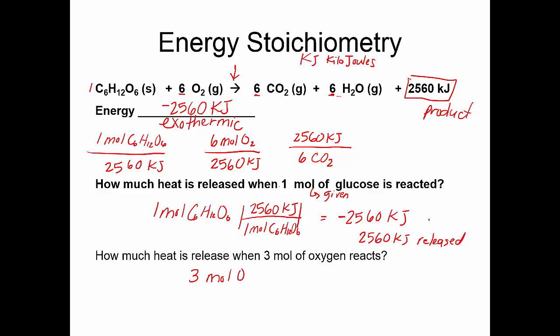3 moles of oxygen — this is my given. Write it all out: moles of oxygen on top. Go to your balanced equation and find your relationship: for every 6 moles of oxygen, you release 2,560 kilojoules. So you have half the amount of oxygen that the balanced equation is showing, and you get out half the amount of energy.